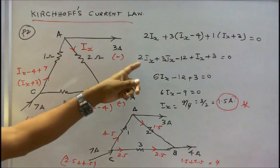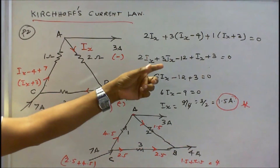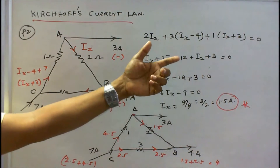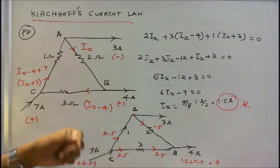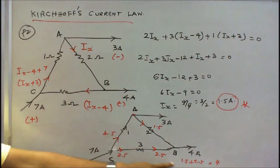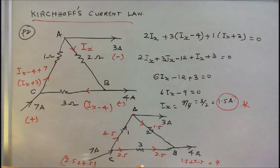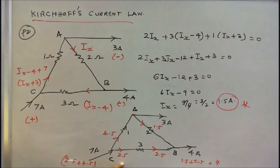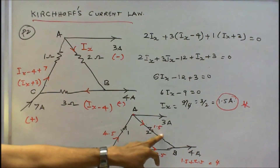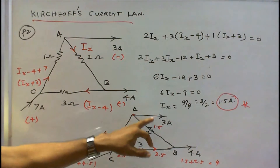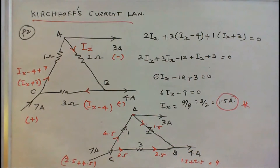The equation is: 2(Ix) + 3(Ix minus 4) + 1(Ix plus 3) = 0, which simplifies to 2Ix + 3Ix minus 12 + Ix + 3 = 0. Solving, Ix equals 1.5 amps. To verify: currents are 1.5 and 2.5, giving 1.5 plus 2.5 equals 4 amps at junction B. Then 2.5 and 4.5 give 4.5 plus 2.5 equals 7. At junction A, 4.5 towards minus 1.5 leaving equals 3 amps. Kirchhoff's Current Law is verified.